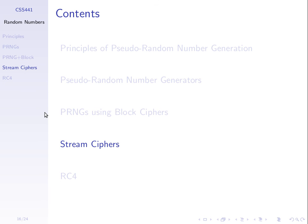The last topic is stream ciphers. From one of our first lectures, we distinguished between block ciphers and stream ciphers. Block ciphers encrypt 64 or 128 bits at a time. Stream ciphers encrypt one bit or one byte at a time. The general difference is that stream ciphers aim to be faster than block ciphers. Stream ciphers are quite simple: they generate a random sequence of bits and XOR the plaintext with that sequence.